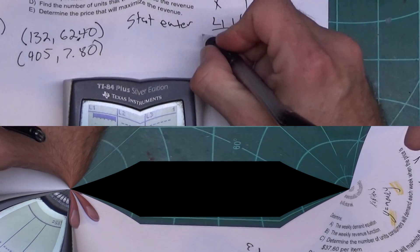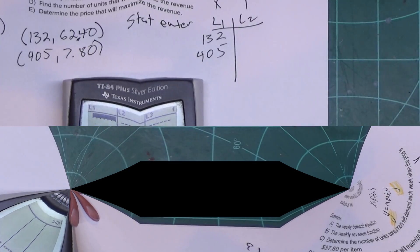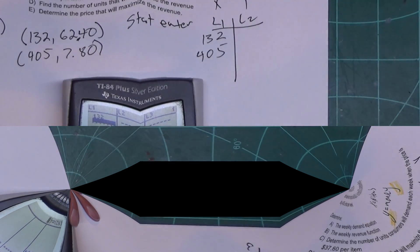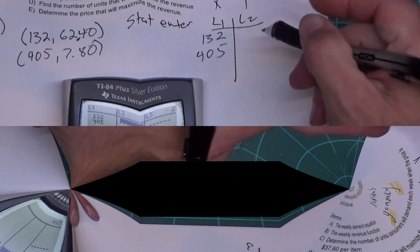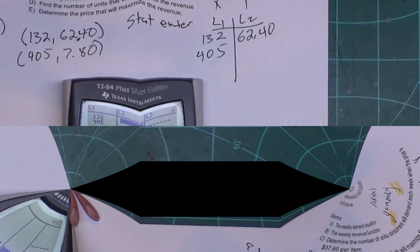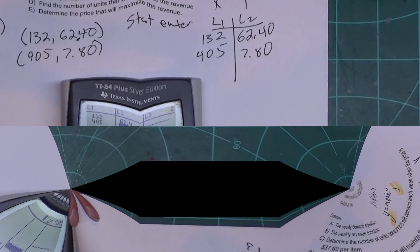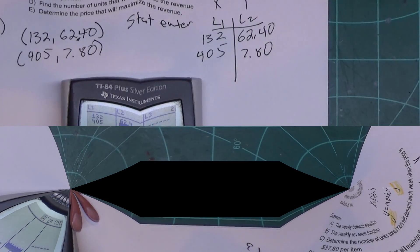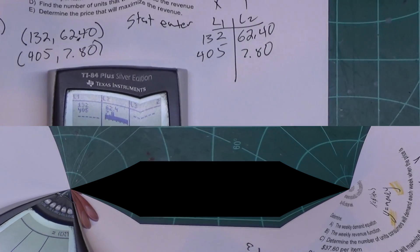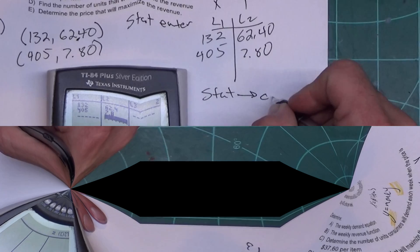Now what we're going to do in the L1 column, we're going to put our X values. In the L2 column we're going to put our Ys. This will be 132 and this is 405. So 132, 405. Now over in the L2 column we're putting the Ys, so this is 62.40 and then this one is 7.80. So I put 7.8. Now I got my points in there. What we're going to do now is we're going to press stat, go over to calc.